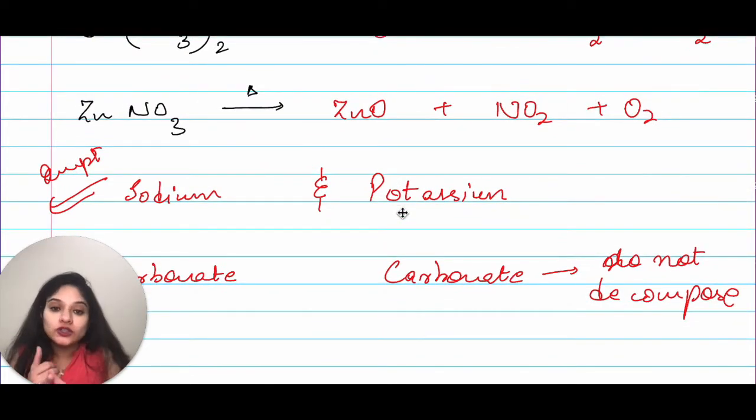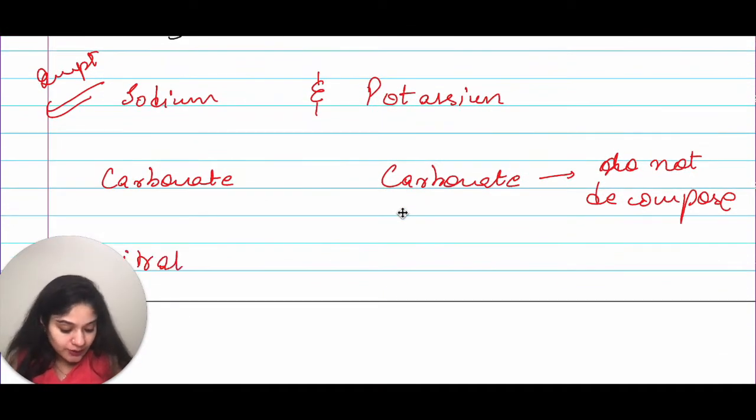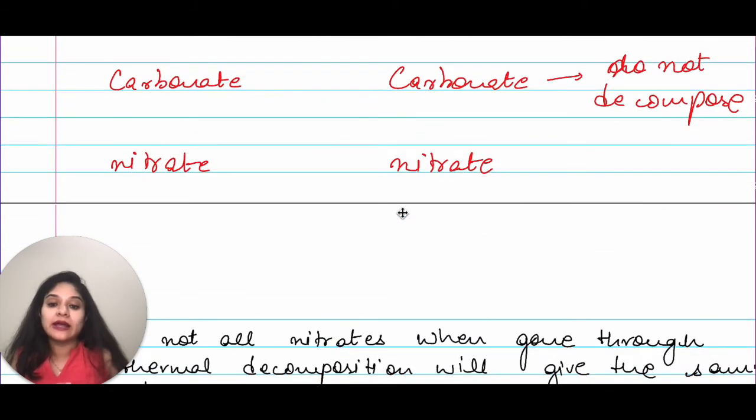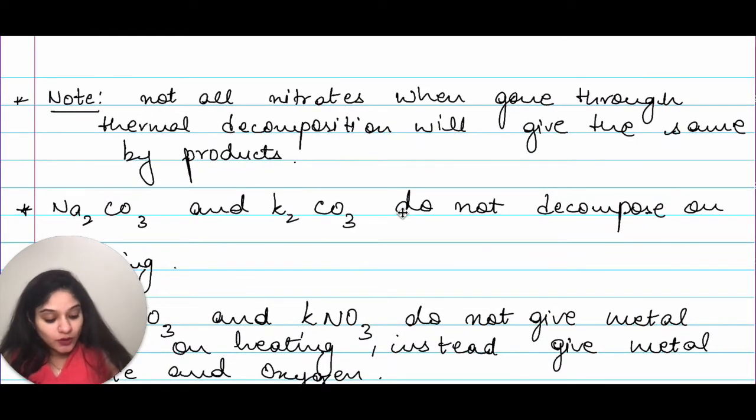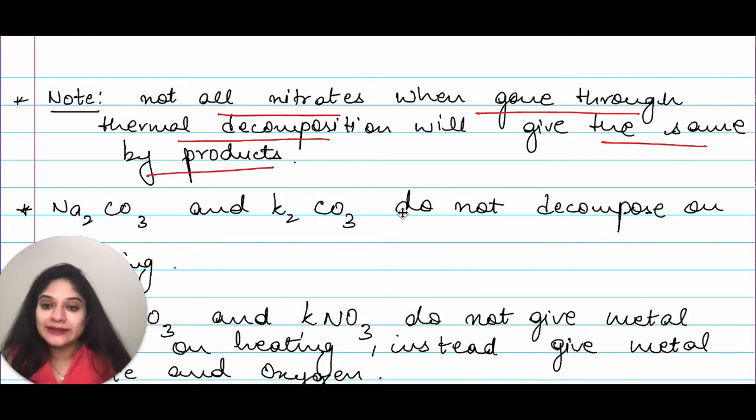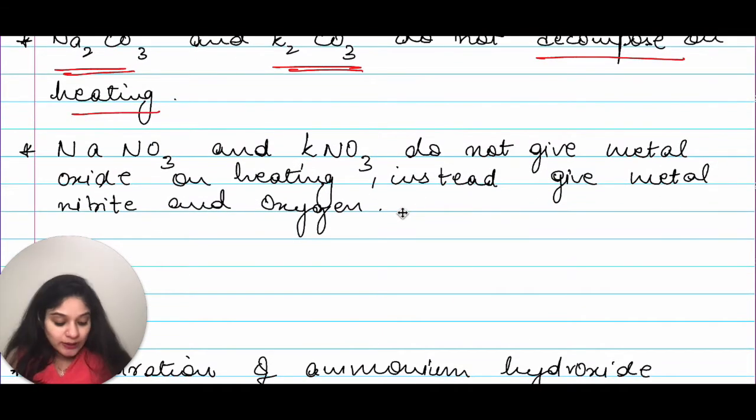Sodium and potassium are the exceptional cases. Sodium carbonate and potassium carbonate will not decompose on heating whereas sodium nitrate and potassium nitrate will not give us metallic oxides whereas it will give us metallic nitrites. Let's look at the details of that. Note, not all nitrates when gone through thermal decomposition will give us the same byproducts. That is the first thing. Then sodium carbonate and potassium carbonate do not decompose on heating. The third is sodium nitrate and potassium nitrate do not give metal oxide on heating. Instead give metal nitrite and oxygen. So, they give you different type of outputs.